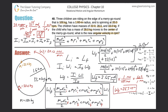The final answer is 25.3 rpm. This makes sense physically: the 28 kg child moved to the center, so their mass is no longer contributing rotational inertia at the edge. That momentum is now distributed over the remaining objects — the merry-go-round, child one, and child three — causing the system to speed up slightly.